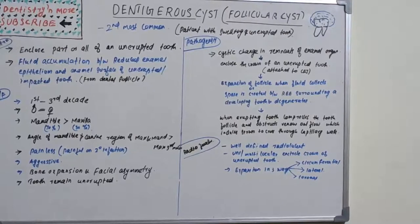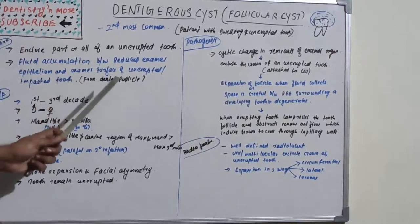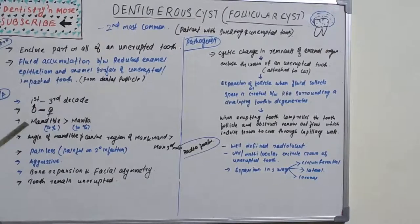As the tooth erupts into the oral cavity, the reduced enamel epithelium is supposed to move away. But what happens is there is some reaction with fluid getting accumulated between this tooth crown enamel and the reduced enamel epithelium, creating a cyst. It is basically from the dental follicle.